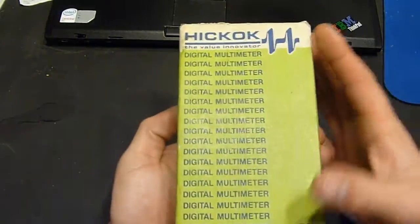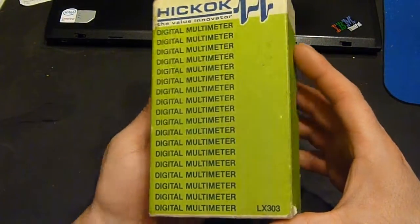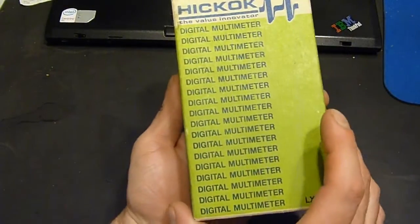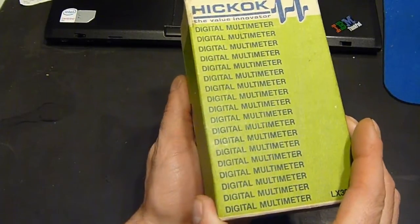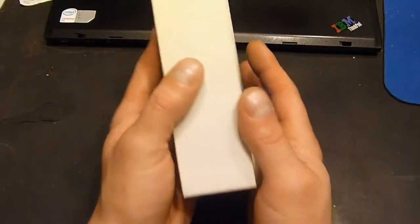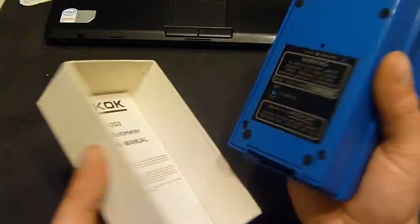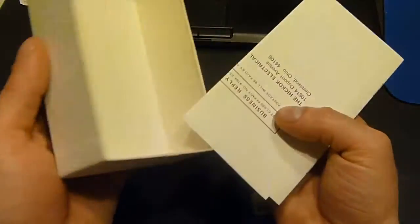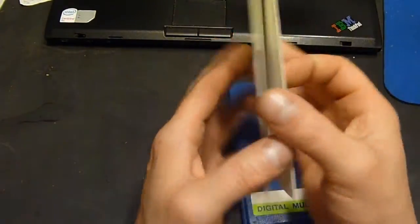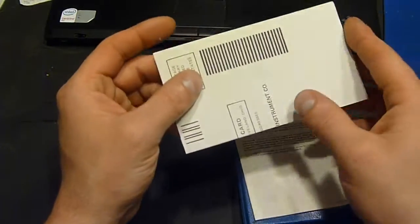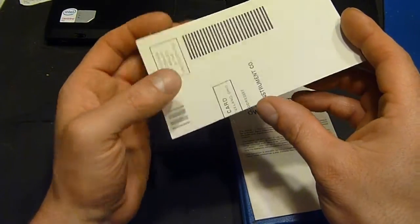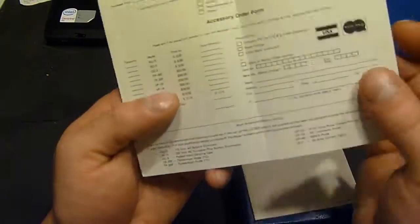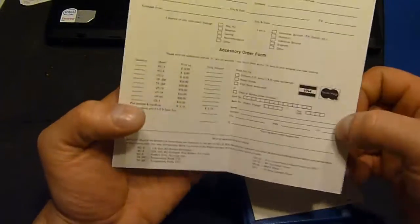Now this has some issues. I actually picked this up for 15 bucks on eBay and it comes in a plastic box. Well actually, I don't think it comes in a plastic box. I think the meter is the plastic box. So we've got the owner's manual and we have the accessory order form. Is there a date on any of this?